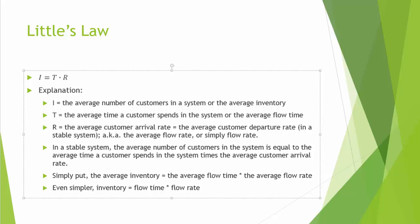The formula of Little's Law looks very simple and straightforward: I equals P times R. I is the average number of customers in a system, or the average inventory. Capital P, often called the average flow time or flow time, is the average time a customer spends in the system. Capital R is the average customer arrival rate.